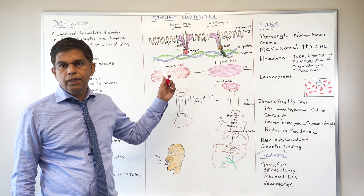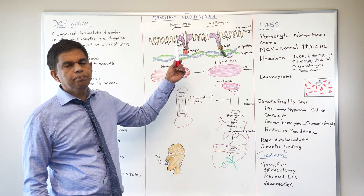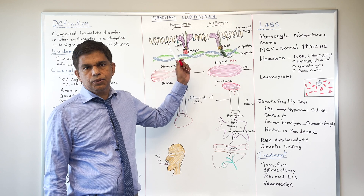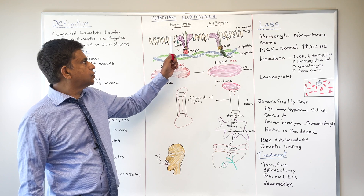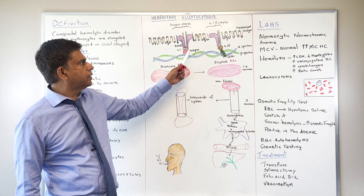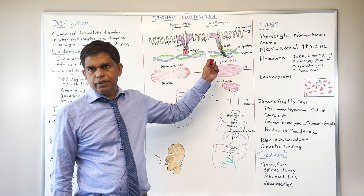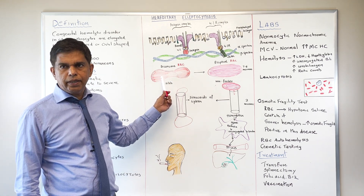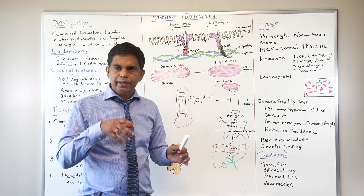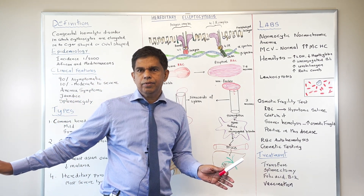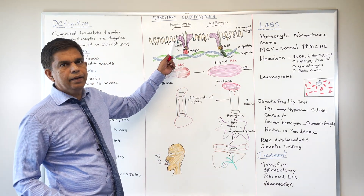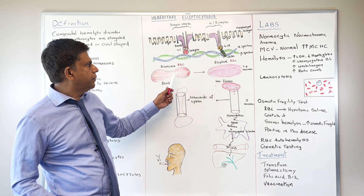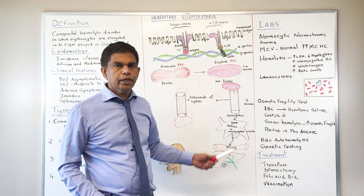Now the most important thing is the pathophysiology. You have the lipid bilayer connected to the cytoskeleton by membrane-associated proteins: the ankyrin complex, band 3, band 4.2, and ankyrin. Then you have the cytoskeleton with alpha-spectrin and beta-spectrin, which maintain the biconcave shape so RBCs can travel through sinusoids and squeeze through without being damaged.